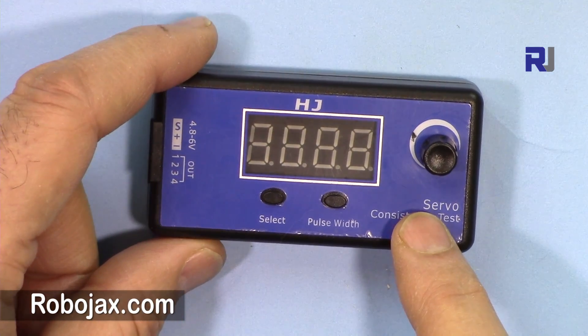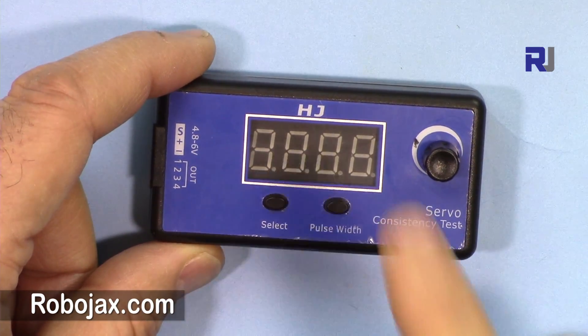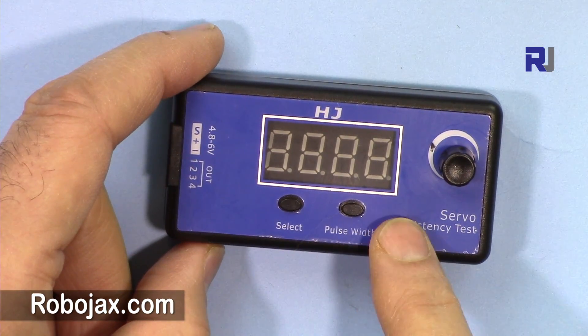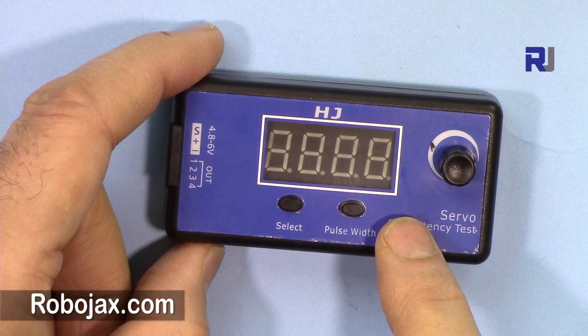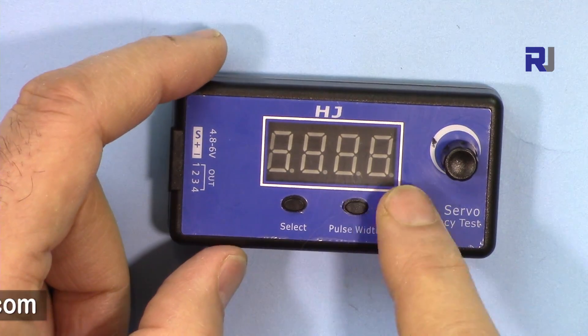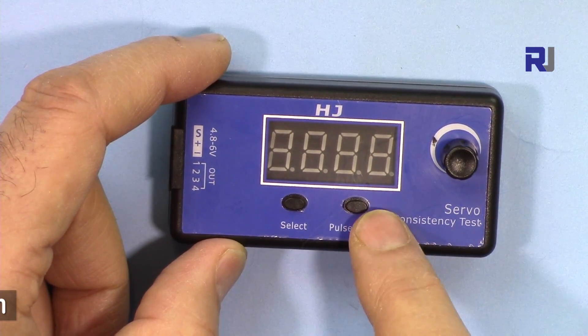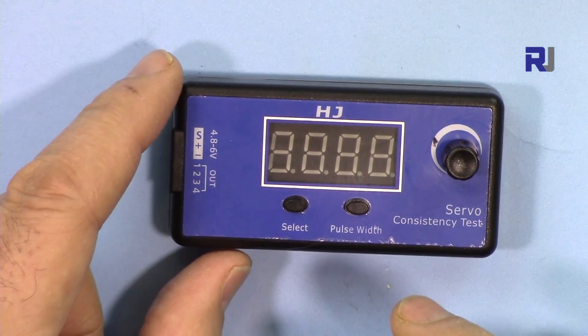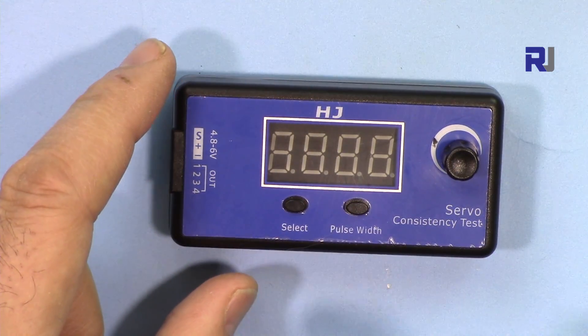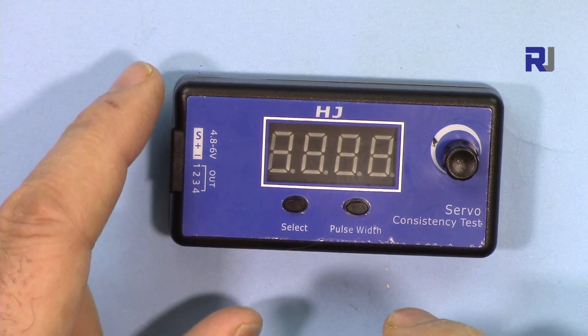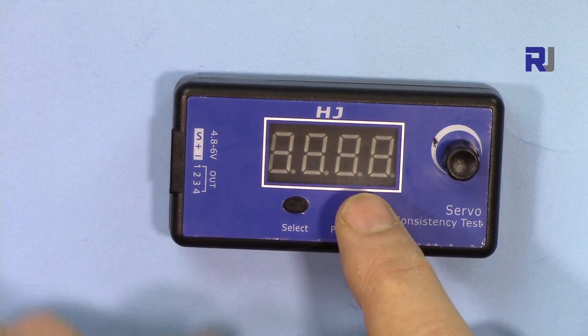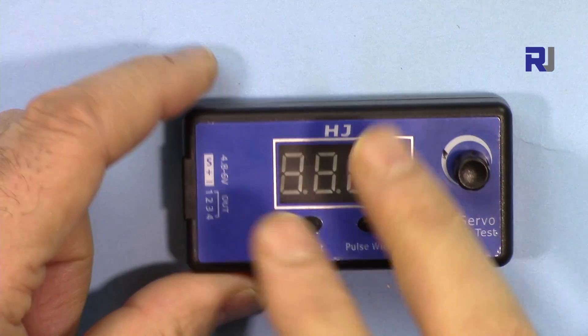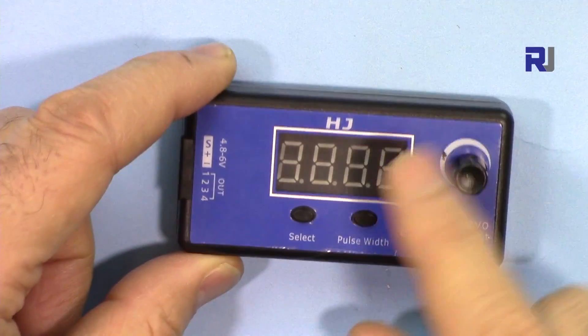For some servos like digital servo steering servos, you need different pulse width. It provides 50 Hertz, 125, and 250 Hertz signals. The width of the signal will be either 20 microseconds, 8 microseconds, or 4 microseconds.